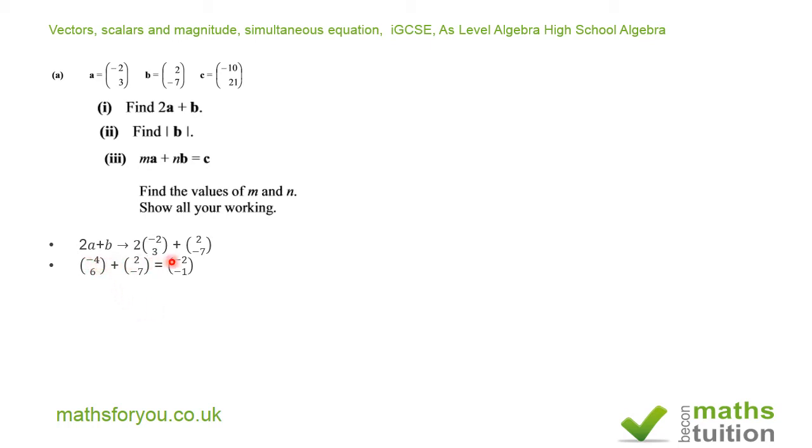So if I do the top section, or the x values if you like, -4 + 2 will give you -2. And then 6 - 7 will give you -1. So this here is our answer.